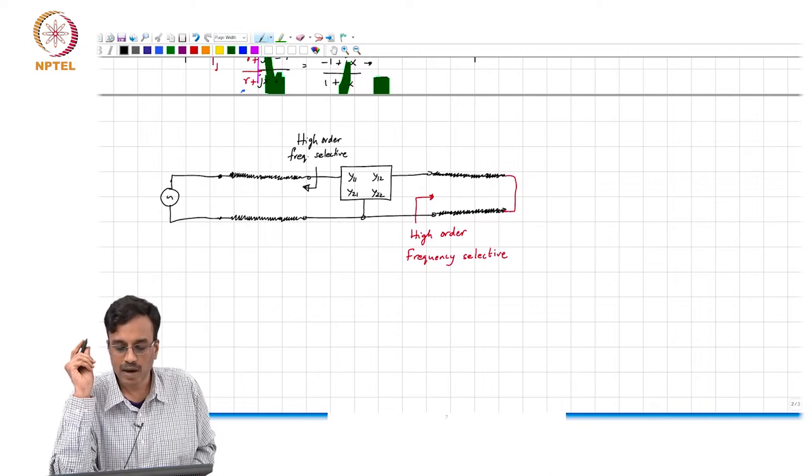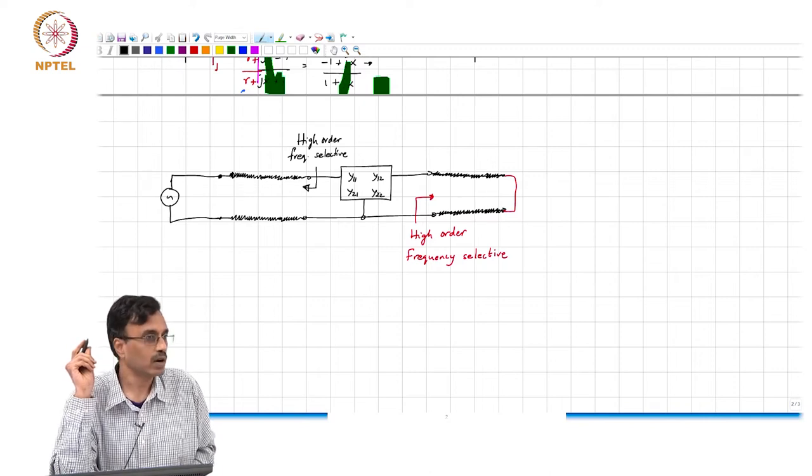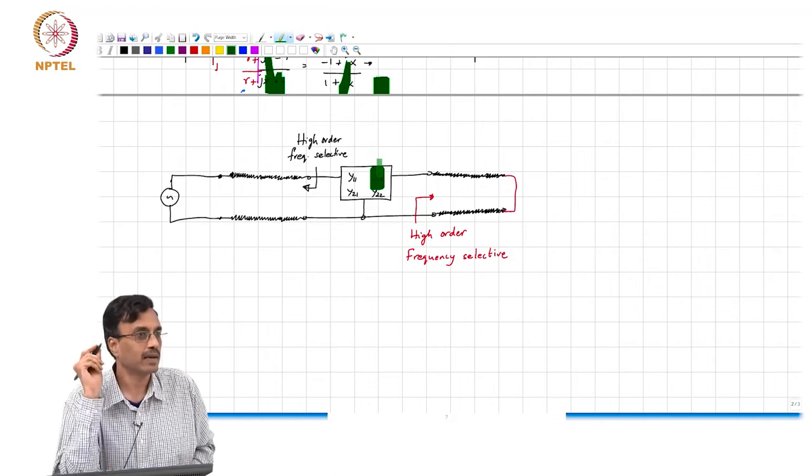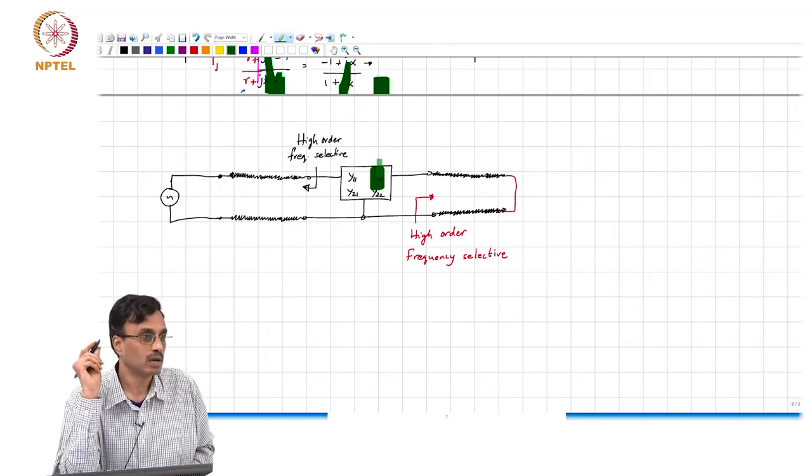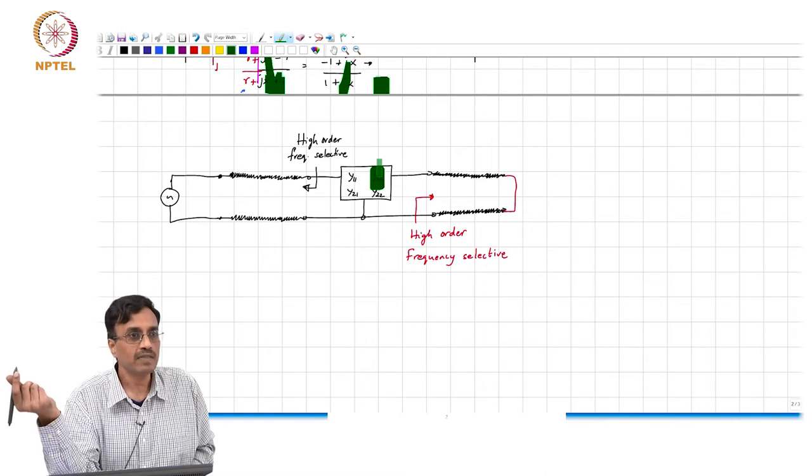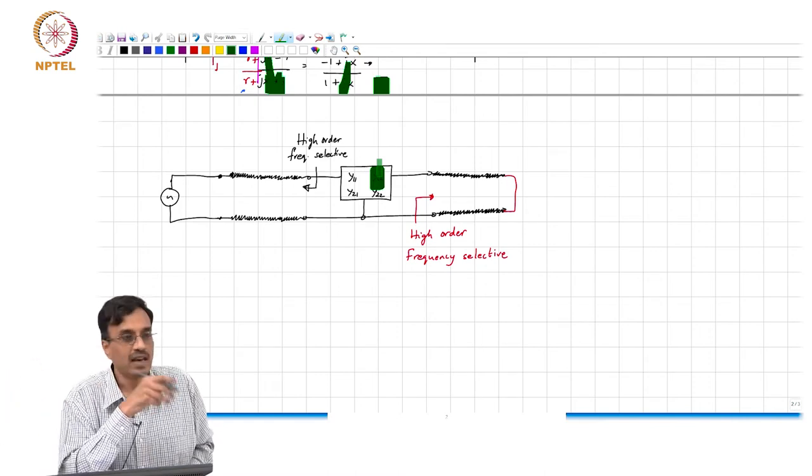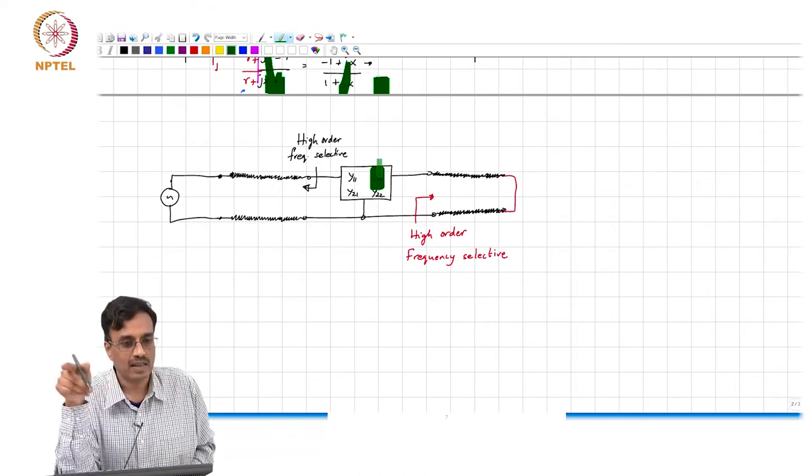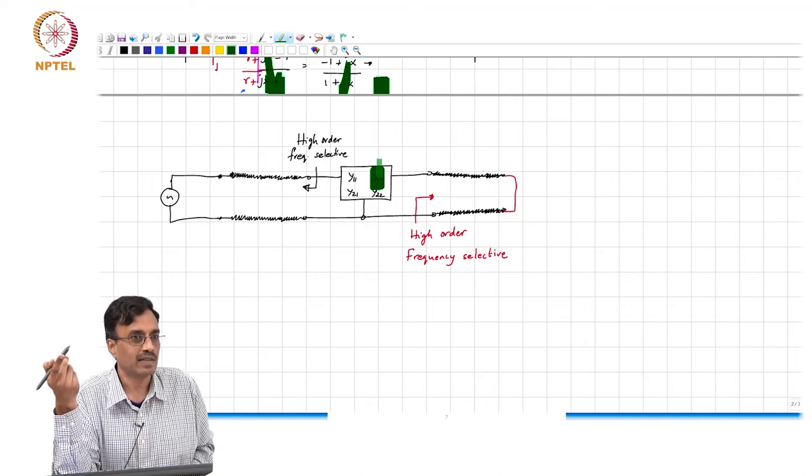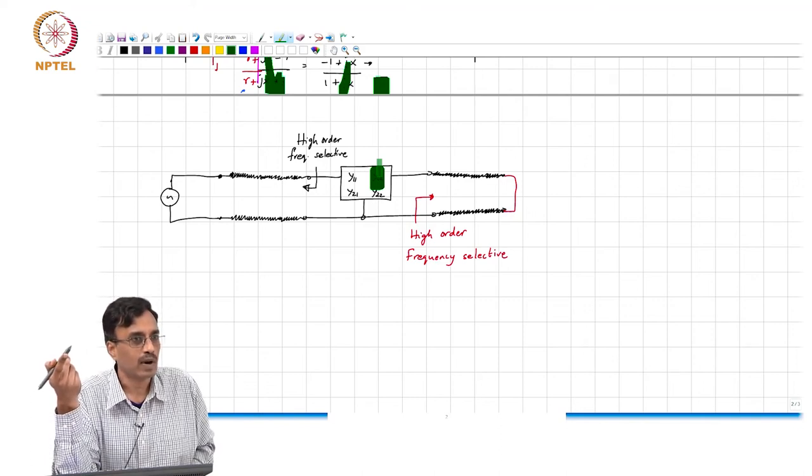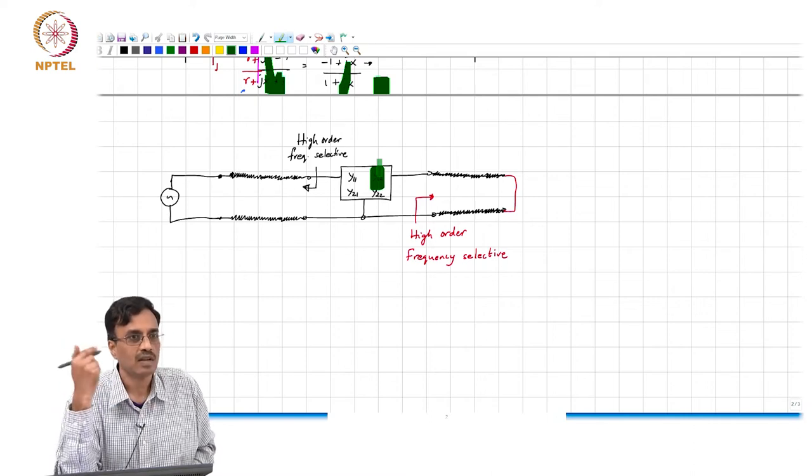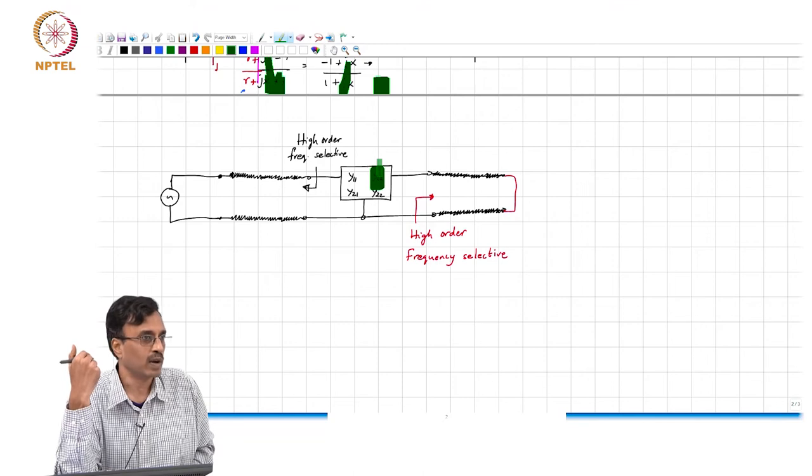What comment can we make about the gain of the network? We have all seen this in analog electronics right. Y12 basically quantifies the feedback that is inherent inside that device under test right. If it is a transistor, you know that the gate drain capacitance basically results in a finite y12. Likewise in a bipolar transistor, the collector base capacitance results in a non-zero y12.